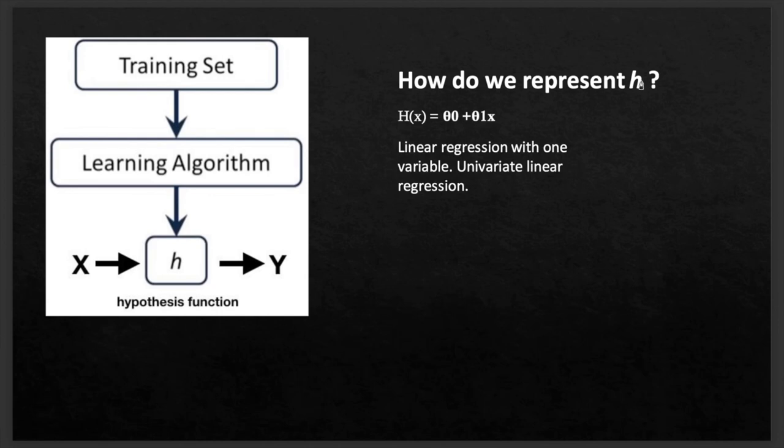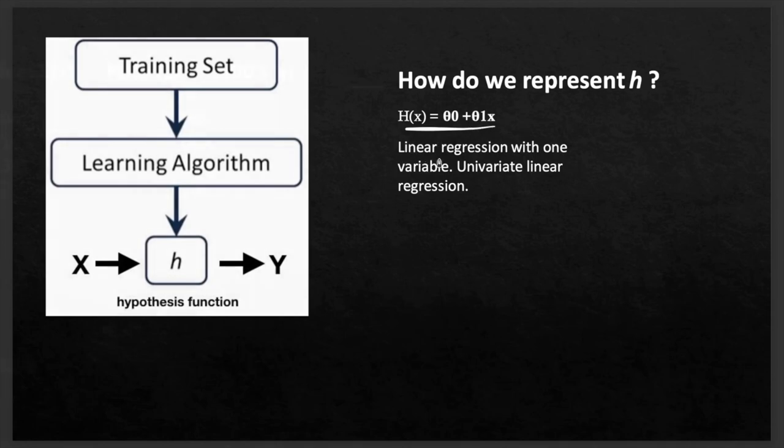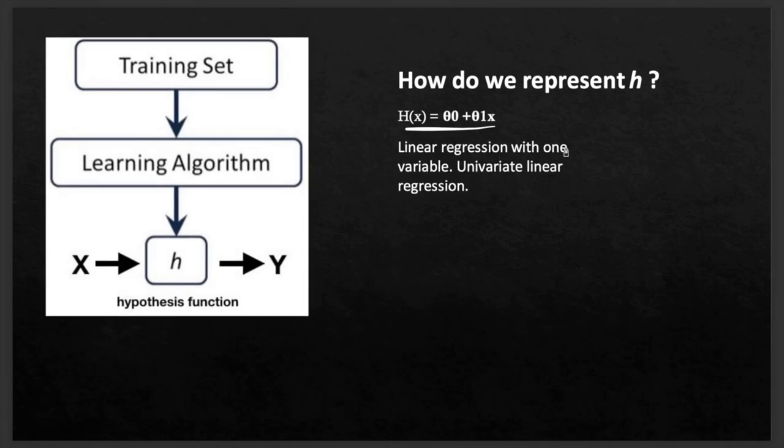How do we represent h? So h is actually a linear equation, so linear regression with one variable. Univariate linear regression. Univariate means one variable. So this is one variable linear regression problem. So this was for today. I will see you in the next video. Thanks for today, see you in the next video.